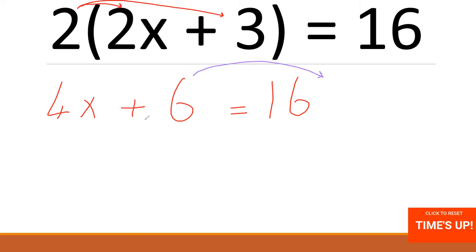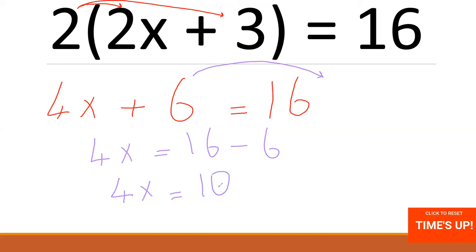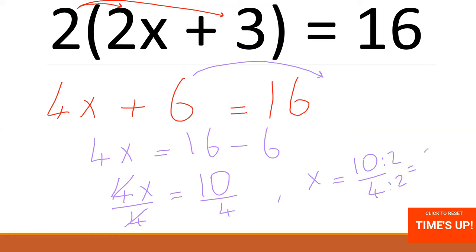The 6 is going to the other side. It was positive, so it becomes negative. So 4X equals 16 minus 6. That gives us 4X equals 10. Now divide by 4 on each side; the 4s cancel each other. X equals 10 over 4. You can simplify by dividing by 2 each side: 10 over 4 becomes 5 over 2, which is 2.5. The answer is X equals 2.5.